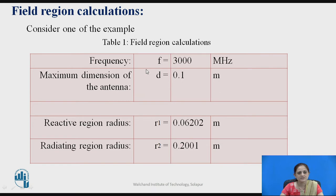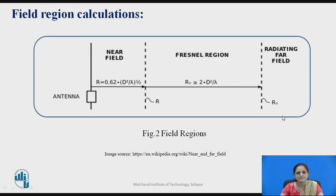To calculate R1 and R2 when you know the frequency and the maximum dimension D of the antenna, consider an example with frequency 3000 MHz and antenna dimension 0.1 meter. By using these equations you can calculate the radii for the reactive region and the radiating region. This figure also shows the different field regions with the near field boundary given by 0.62 × √(D³/λ), the Fresnel region by 2D³/λ, and beyond that the radiating far field begins.